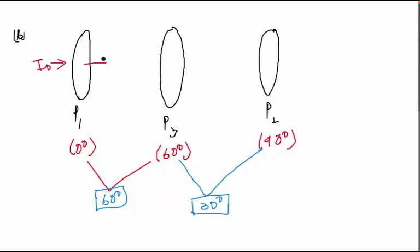And now what we have to calculate is what will be the intensity after it gets again polarized with P3, because for the P3 polaroid the incident intensity is I0 by 2.